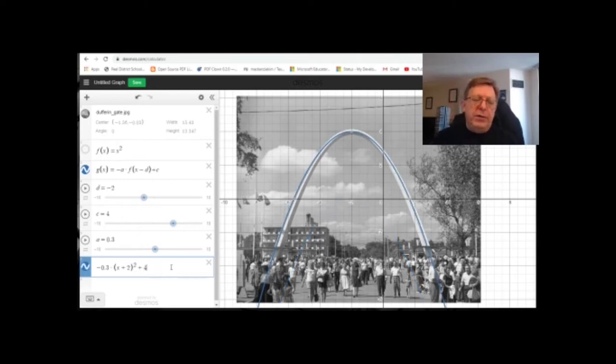Now, if you expand this, you will get a parabola which matches the parabola of the Dufferin gate. Drawn to scale, of course. And you should be able to expand that and figure out what it is. Now, this is using combinations. This is an example of combinations of transformations.